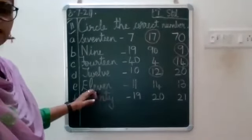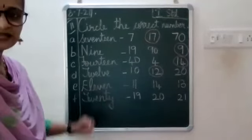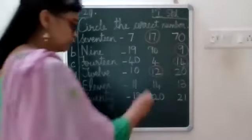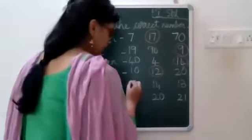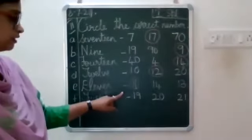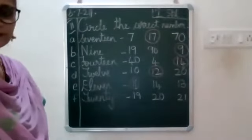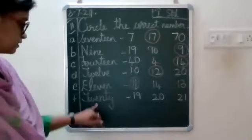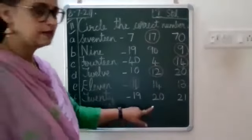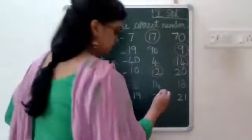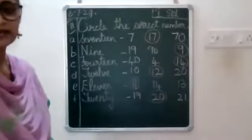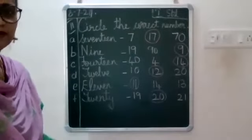Now next one — 11, where does 11 come? First one. Circle 11 here. Yes — and then the 20, second one. Very good.